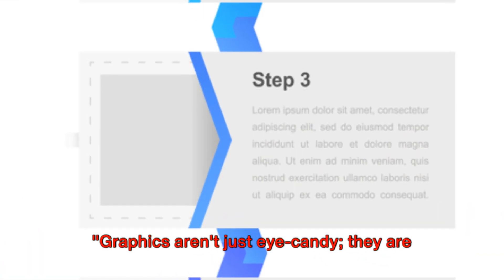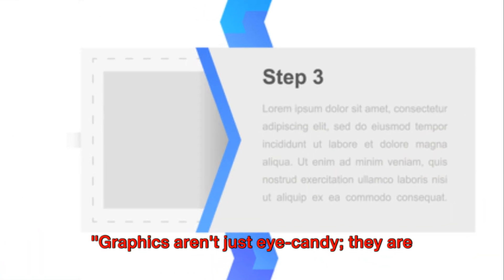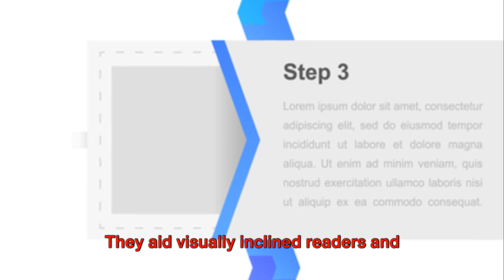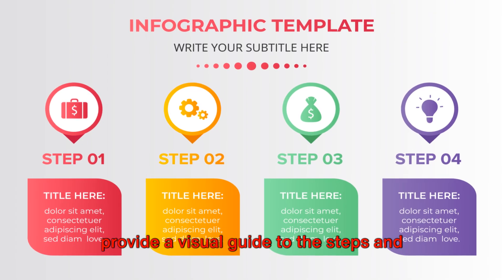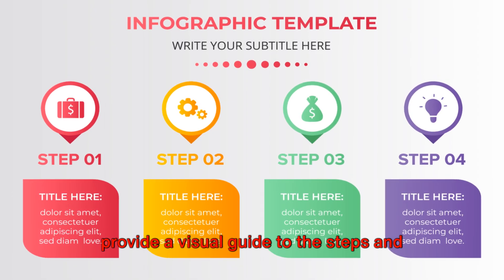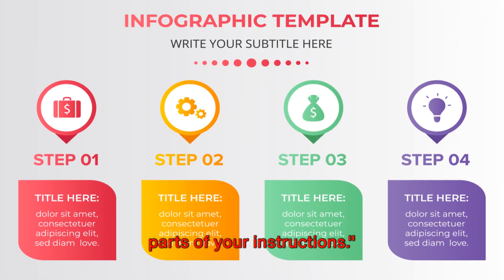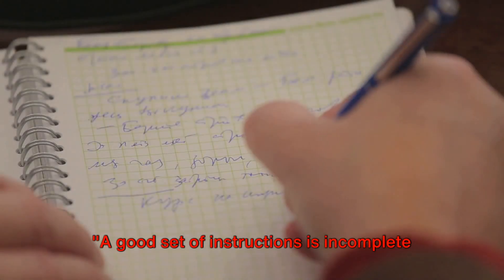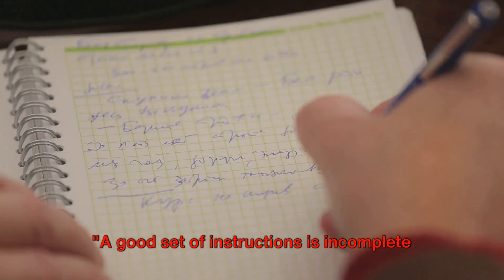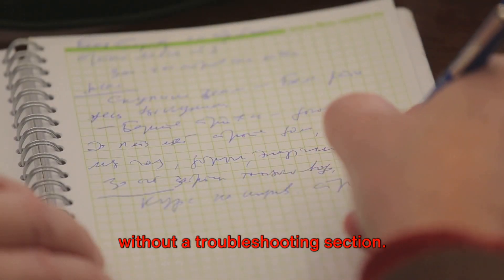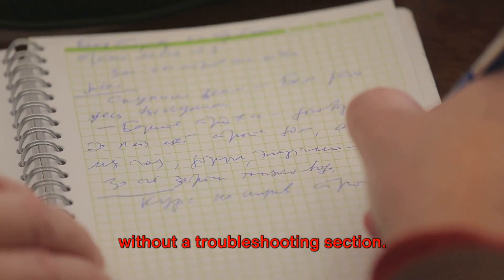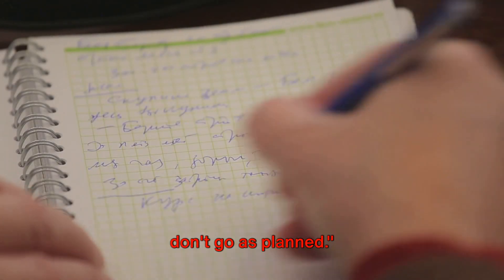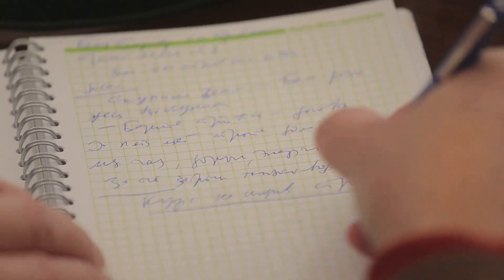Graphics aren't just eye candy — they are integral to technical writing. They aid visually inclined readers and provide a visual guide to the steps and parts of your instructions. A good set of instructions is incomplete without a troubleshooting section, which helps guide readers when things don't go as planned.